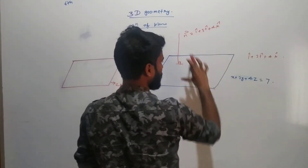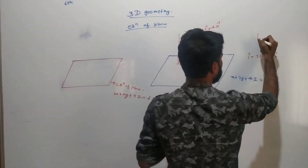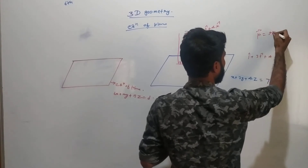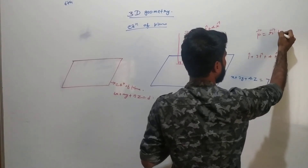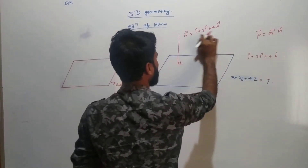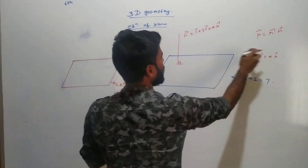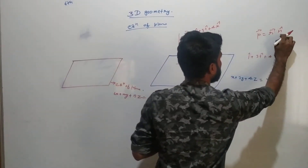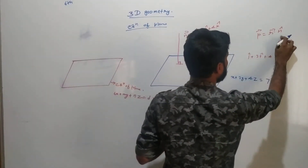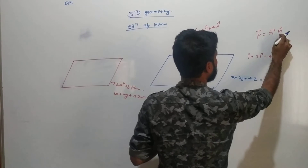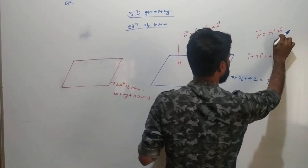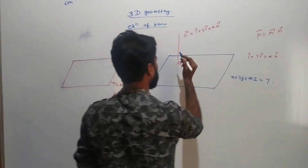In the same direction, the equation was p = r dot n-cap. But what we currently have is n vector, not n-cap. We need to find n-cap, which is the unit vector. The unit vector itself represents the direction cosines through its components.